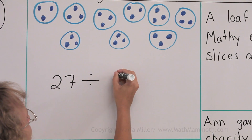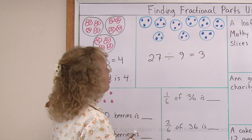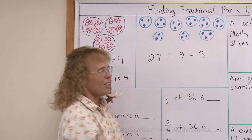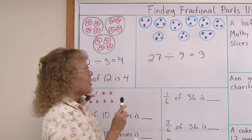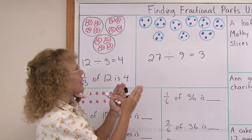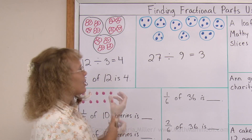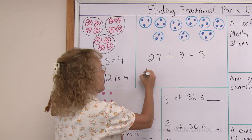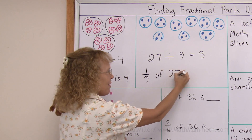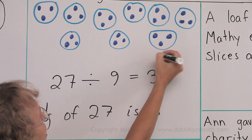To write the division sentence, I start with the total — 27 — and they are divided into nine groups, with three in each group: 27 divided by nine equals three. You could also write 27 divided by three equals nine. Now for the fractional number sentence, there are nine groups or nine parts, so one ninth of all 27 is just three. This here is one ninth part of them.